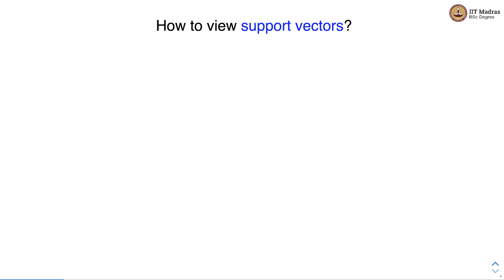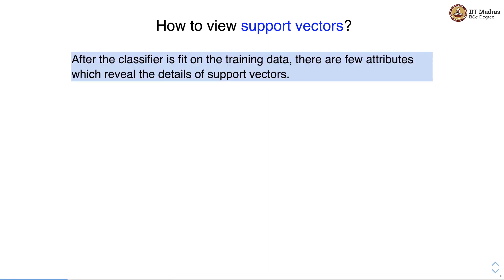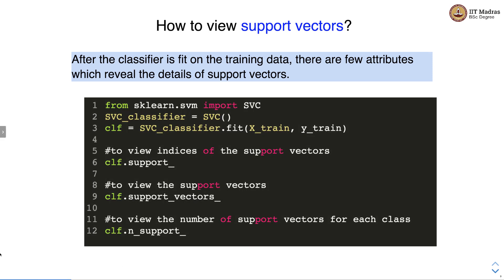After the classifier is fit on the training data, we can view the support vectors using a few attributes. The support vectors themselves are accessible via the support_vectors_ member variable. The indices of the support vectors can be accessed through the support_ member variable, and the number of support vectors for each class is available via the n_support_ member variable.